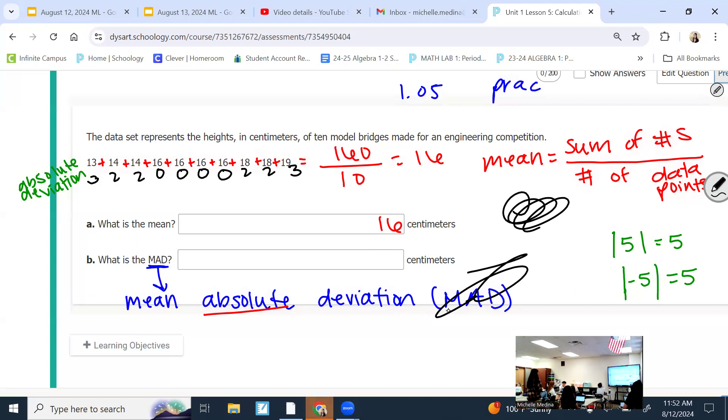Our mean absolute deviation would be us averaging the deviations. So now I'm going to add these numbers and divide by however many I added, including the zeros. So I should still be dividing by 10. Add these numbers, divided by 10, give me 1.4 for our MAD.